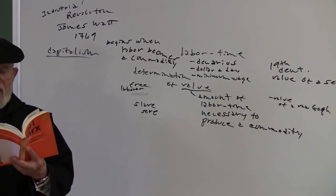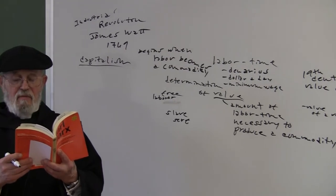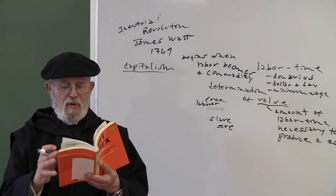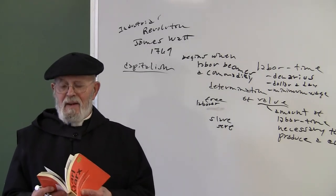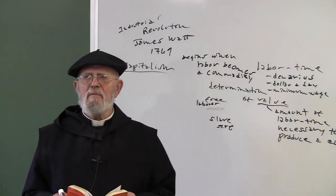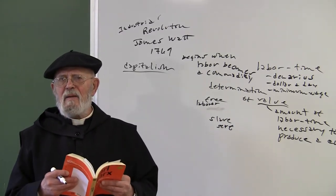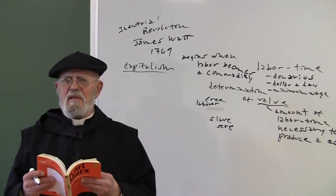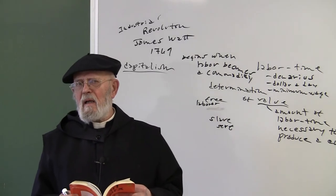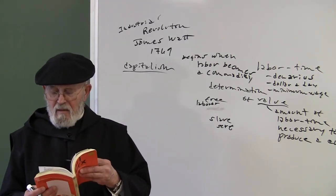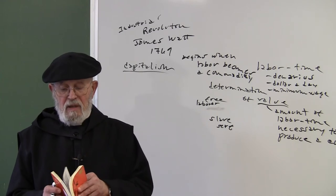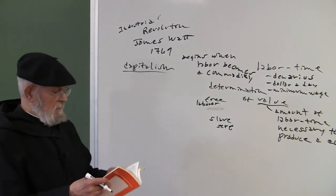The place of manufacture was taken by the giant modern industry, the place of the industrial middle class by industrial millionaires, capitalists. The leaders of whole industrial armies, the modern bourgeois. The bourgeois in Hegel's world were shopkeepers, farmers, members of different guilds. The bourgeoisie for Marx has a considerably different meaning. The modern bourgeoisie is basically the capitalist.